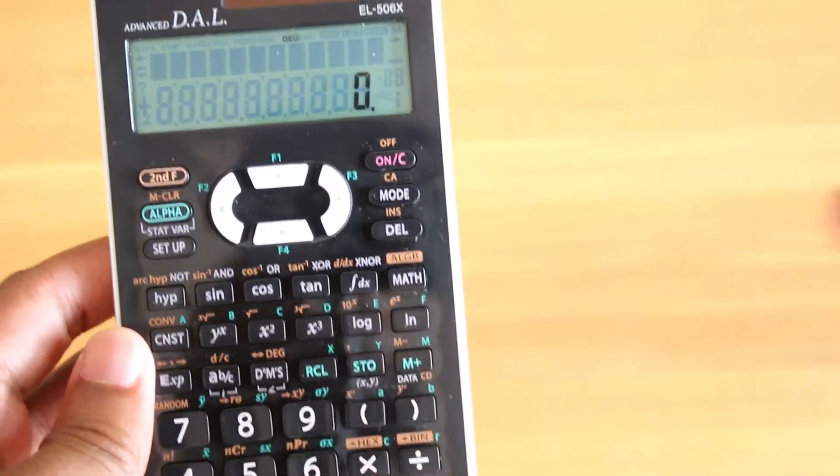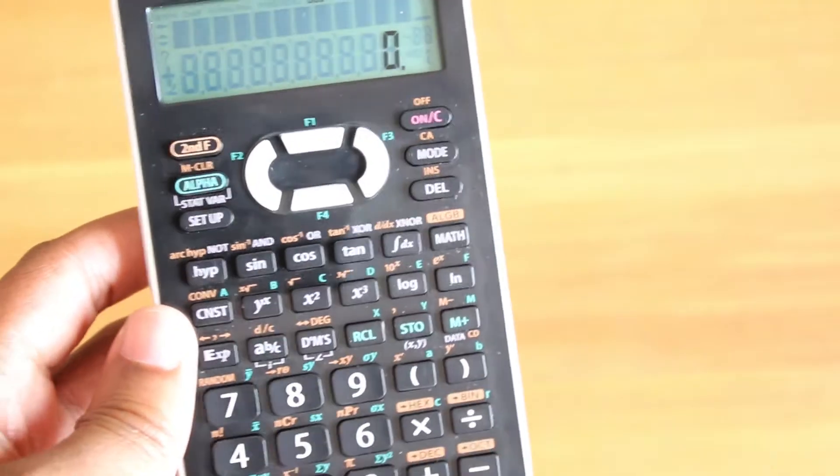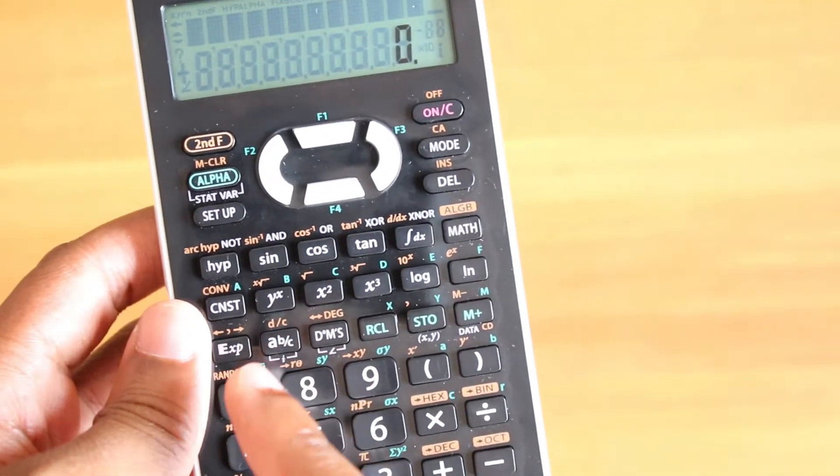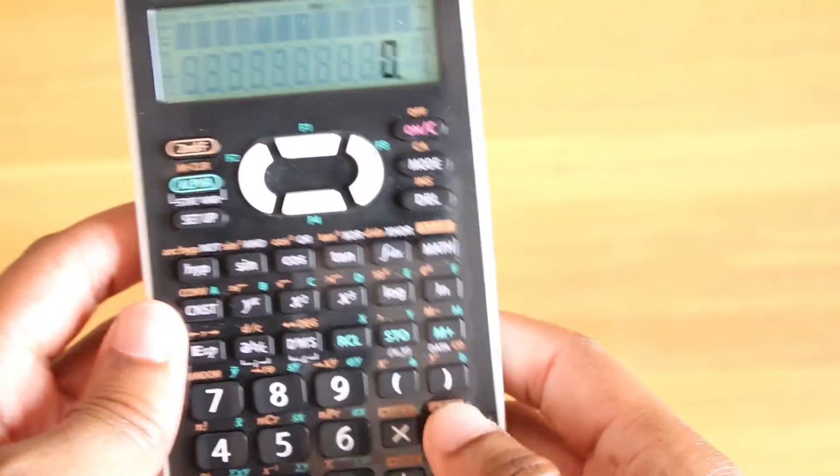Which is just a big word for the line between the numerator and denominator in a fraction, or it can act as a division between the whole number and the fraction. Let me show you how it works.